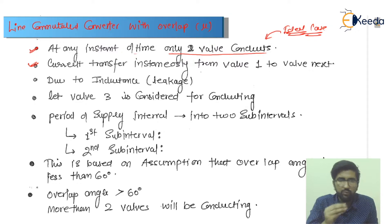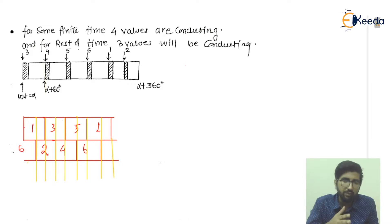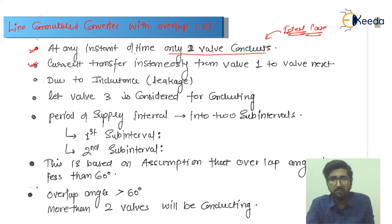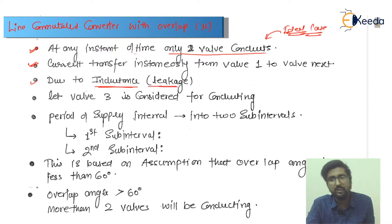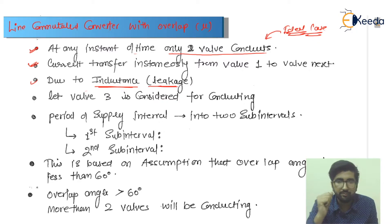In the ideal case, from valve number one the next in the upper portion will be three, and after three there will be five, and so on. But what happens due to the inductance or leakage reactance? The property of inductance is that it does not allow sudden changes in current.